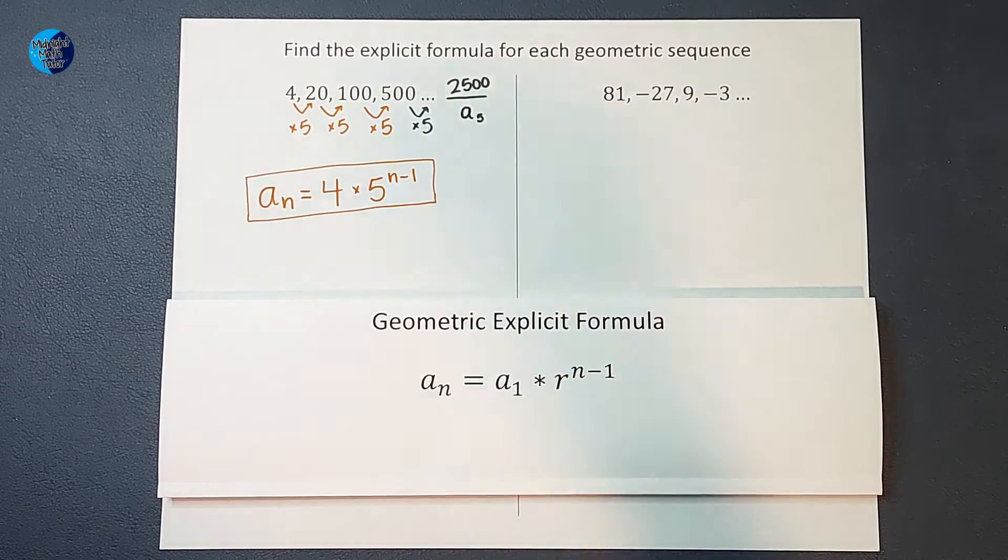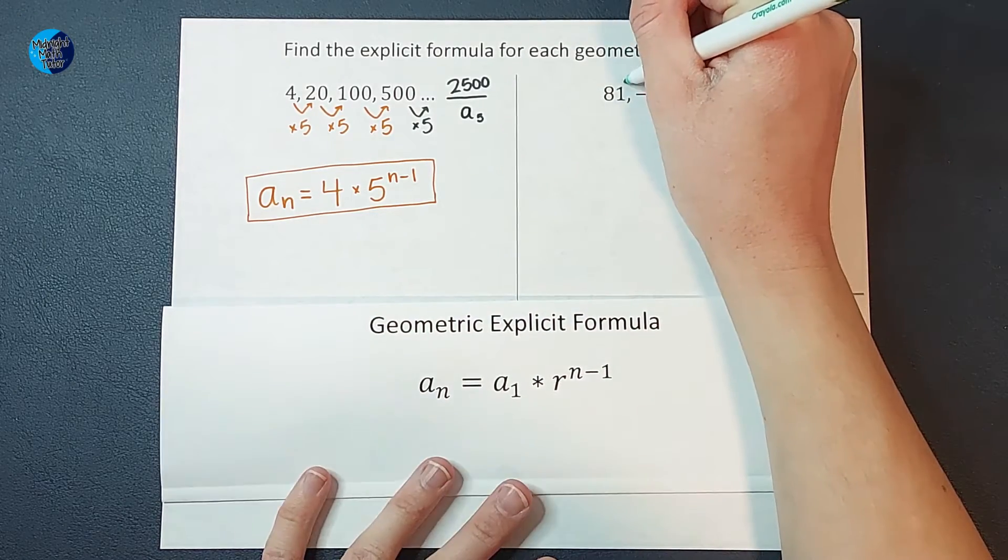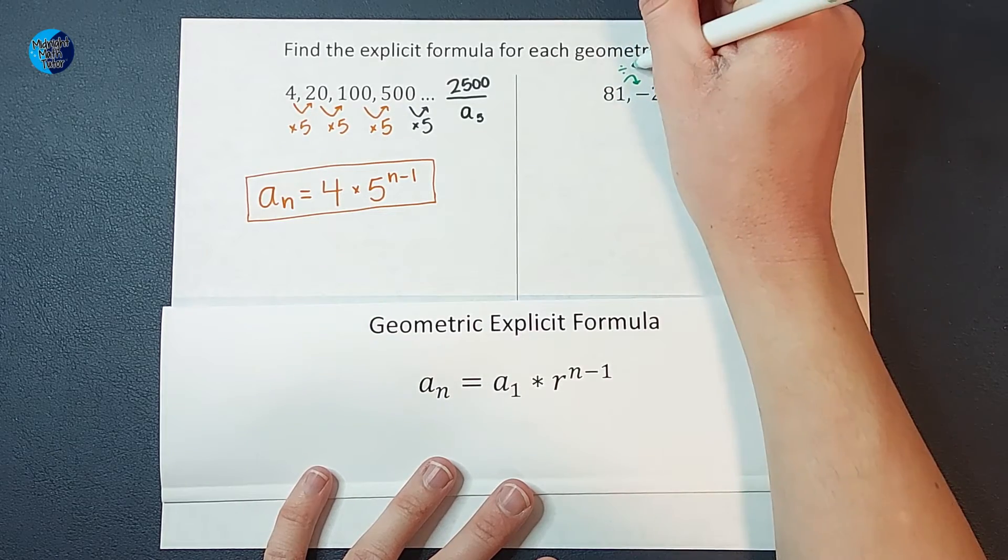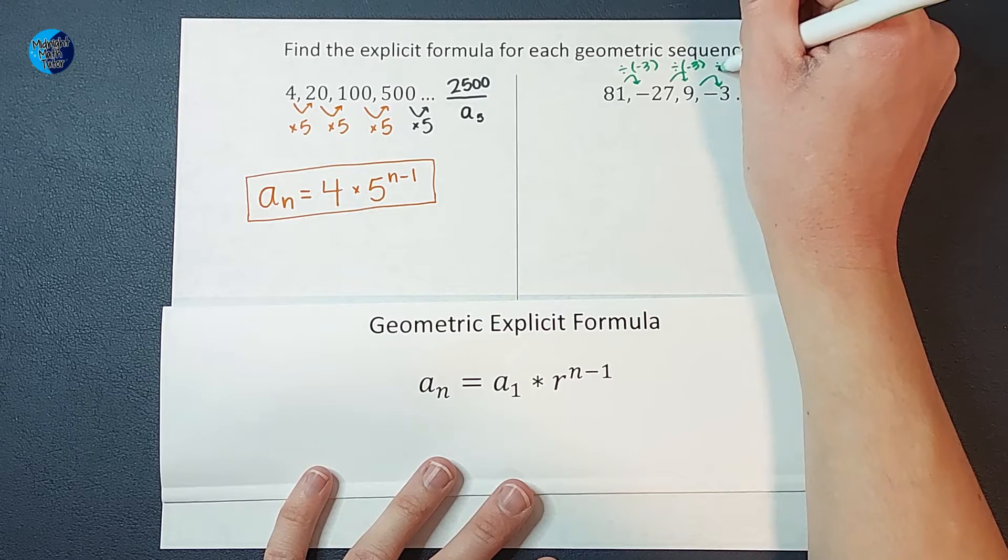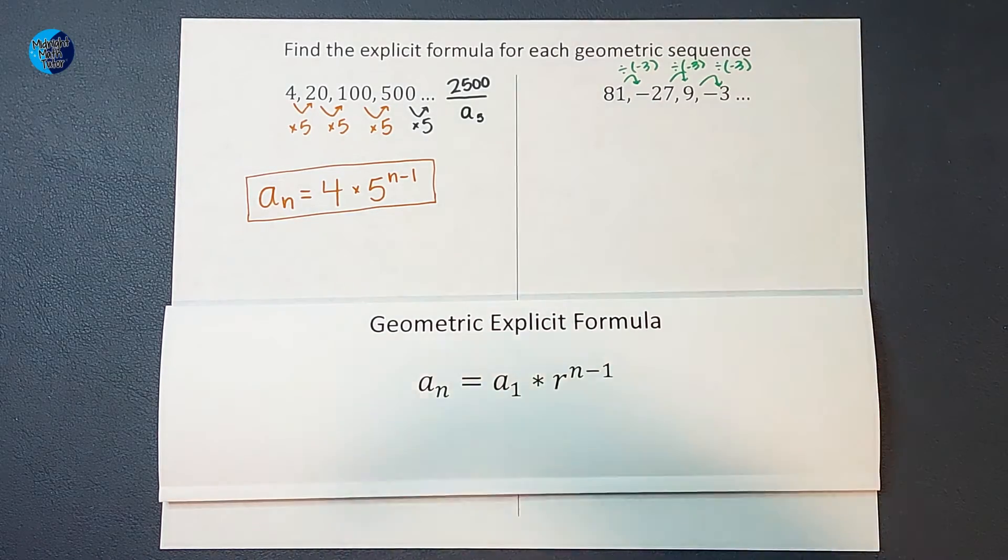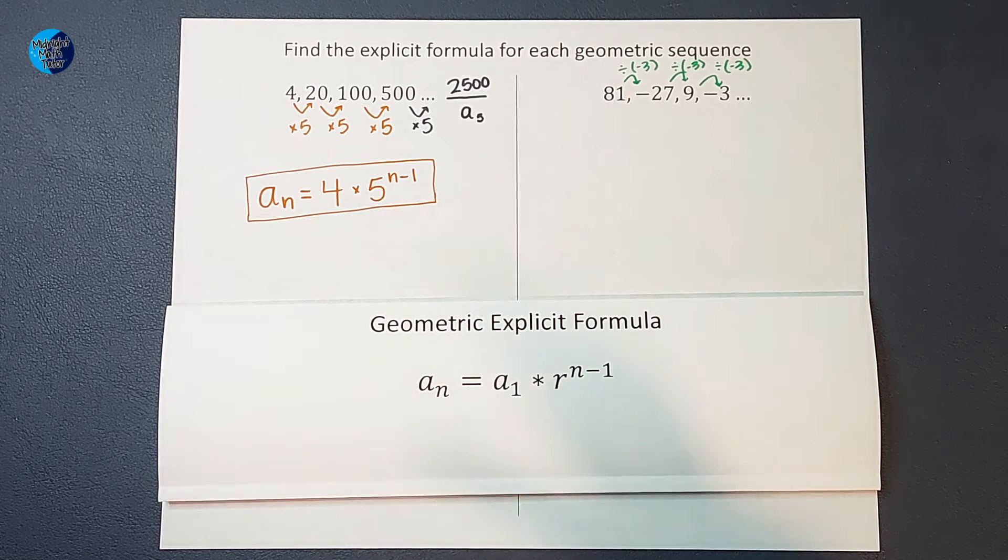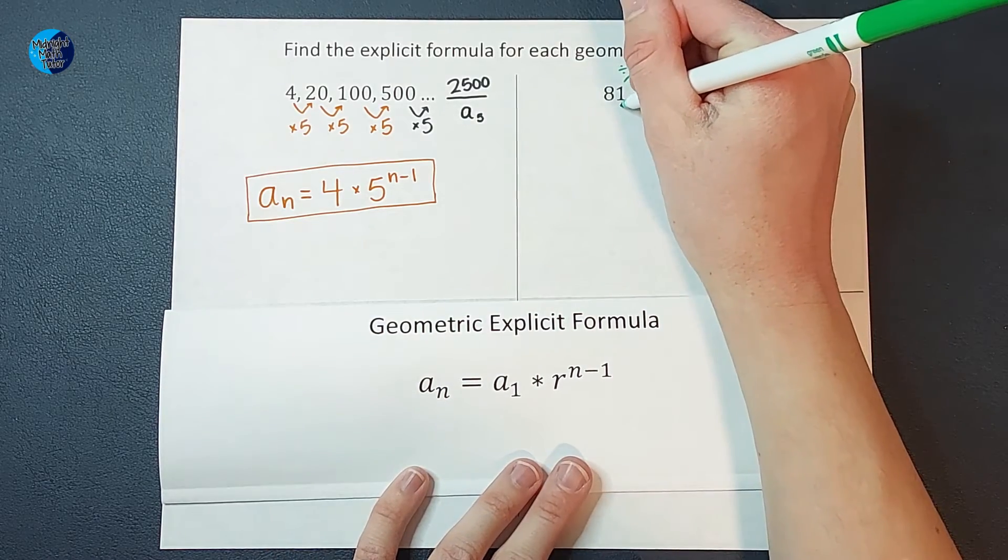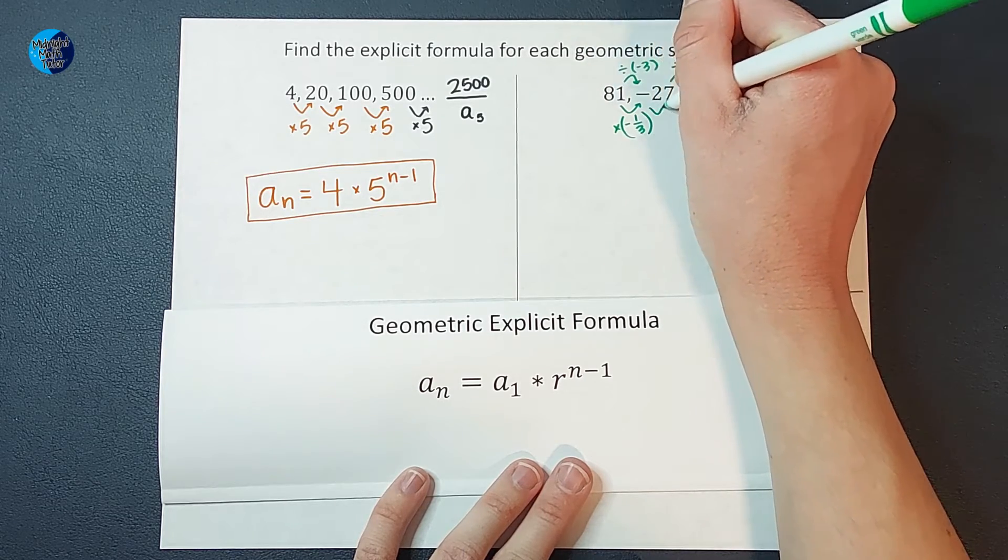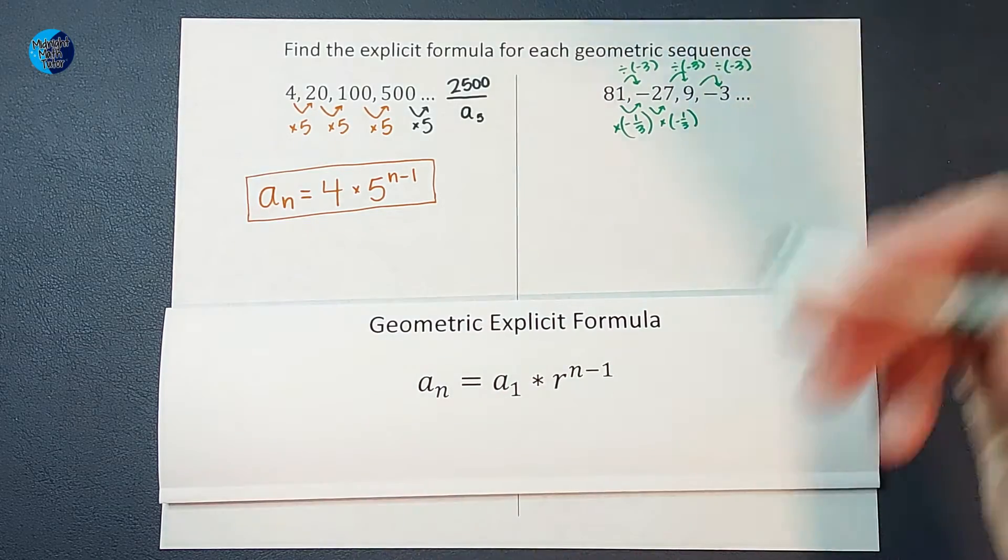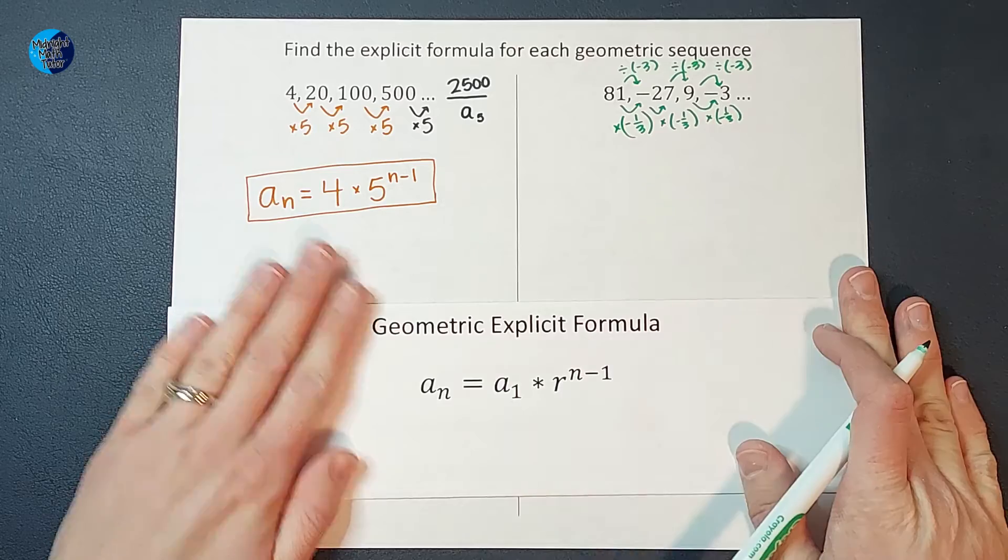So over here, what are we doing each time? We are dividing by negative 3. We're dividing by negative 3 each time. Now, a lot of times when we work with sequences and these formulas, instead of thinking of divide, a lot of times we like to think of multiplying by a fraction, which is really the same thing. So I could also think of this as that we are multiplying by a negative 1 3rd, right? That's just another way of saying it. So we could also be multiplying by negative 1 3rd each time.